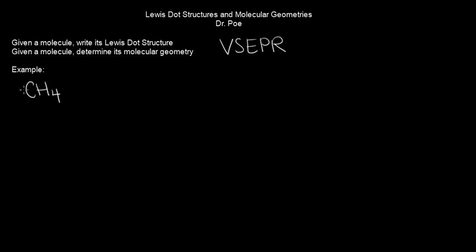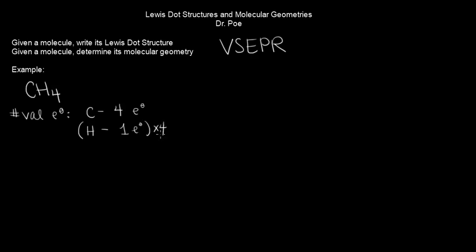The first thing we want to do is determine the number of valence electrons we have to work with. Carbon is in group four, so carbon brings four valence electrons to the party. We have four hydrogens, and each one brings one electron, giving us four total from hydrogen. So overall, we have eight valence electrons to work with.